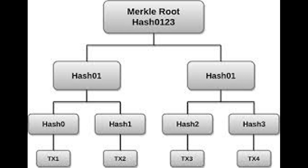Merkle trees. Hash value 32 bits. Merkle trees. In comes the data, outcomes 256. Merkle trees. Hash value 32 bits. Merkle trees. In comes the data, outcomes 256.